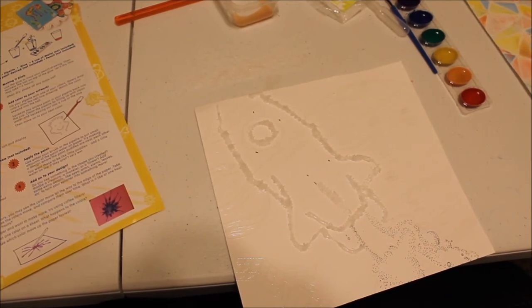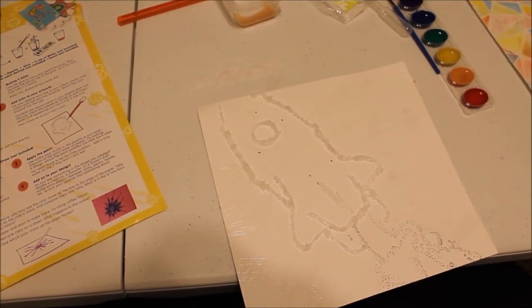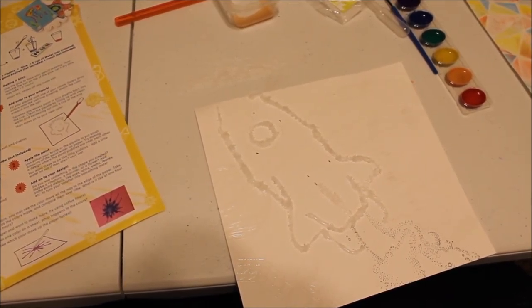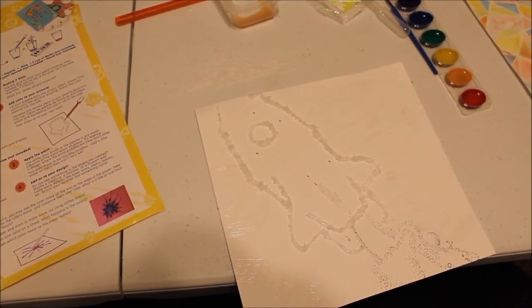Step four says add color to your artwork. Fill your pipette with one of your colors, slowly drop colors onto the salt line, and watch the color expand into the salt.